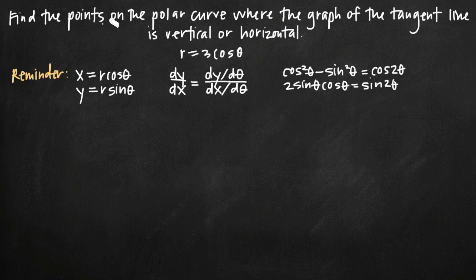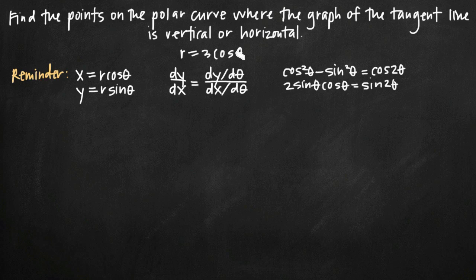Today we're going to be talking about how to find the points along the polar curve where the graph of its tangent line is either vertical or horizontal. In this particular problem we've been given the polar curve r equals 3 cosine theta and we're asked to find this curve's vertical and horizontal tangent lines. The graph will have vertical tangent lines where the derivative is undefined and horizontal tangent lines where the derivative is equal to zero, so we need to go ahead and find that derivative.